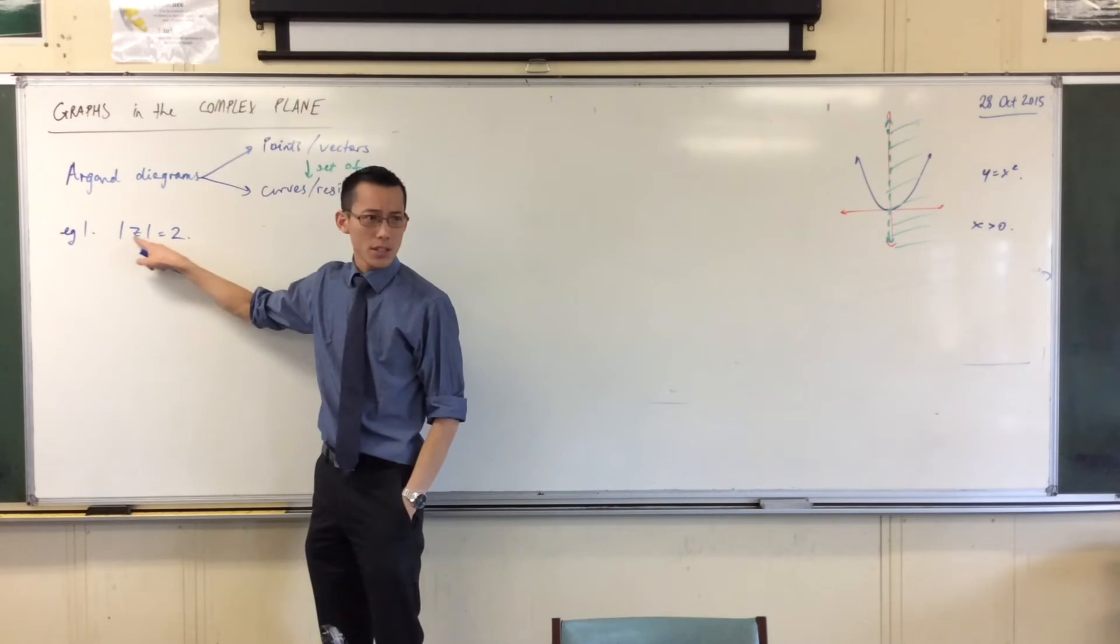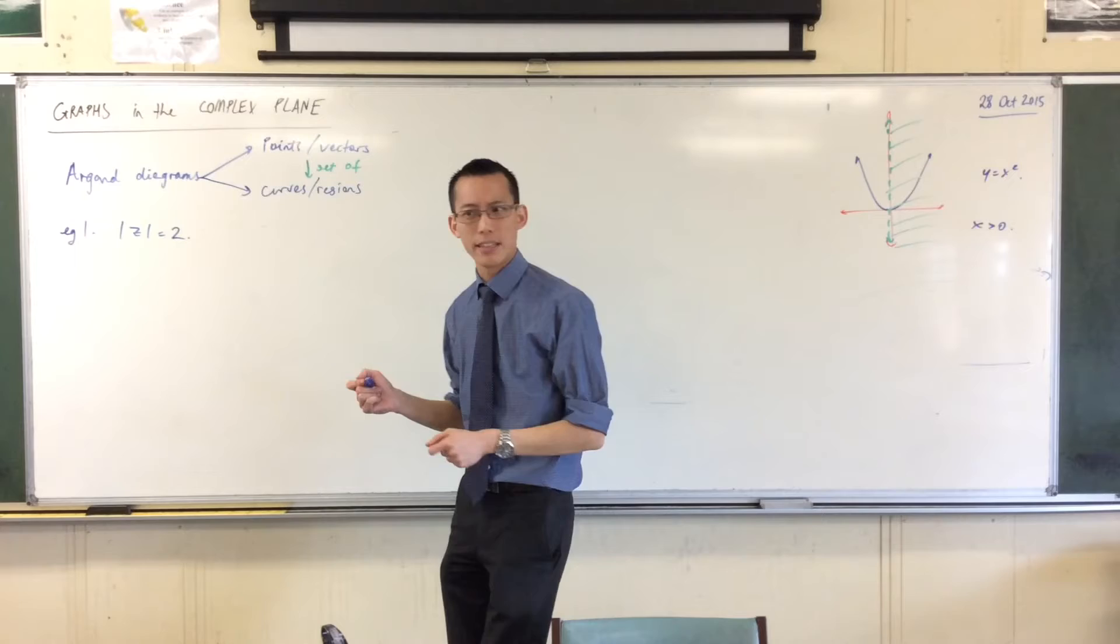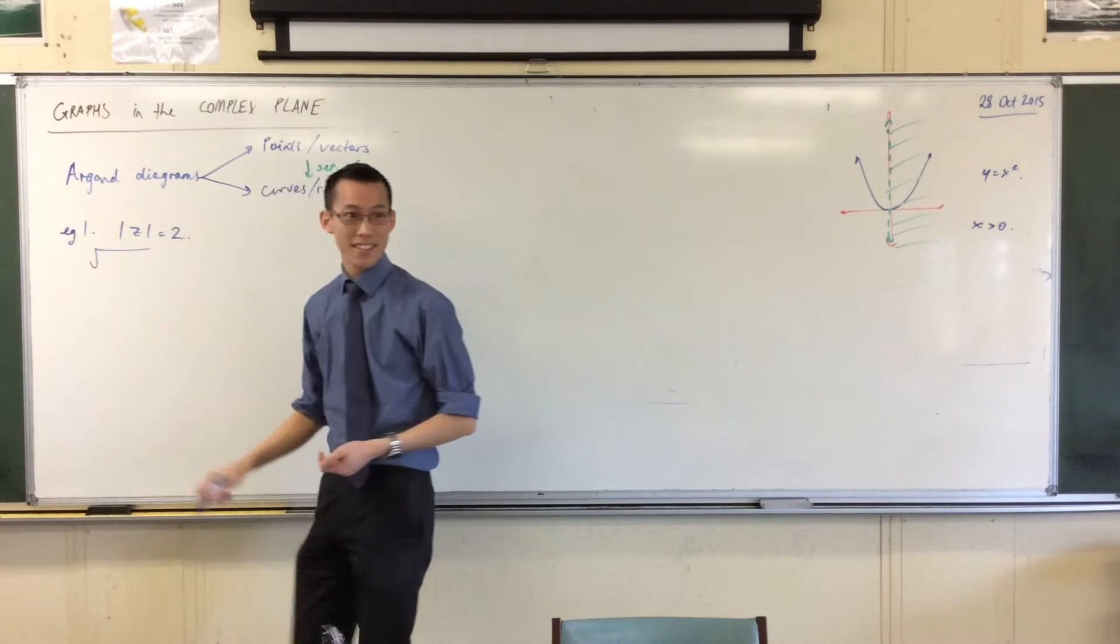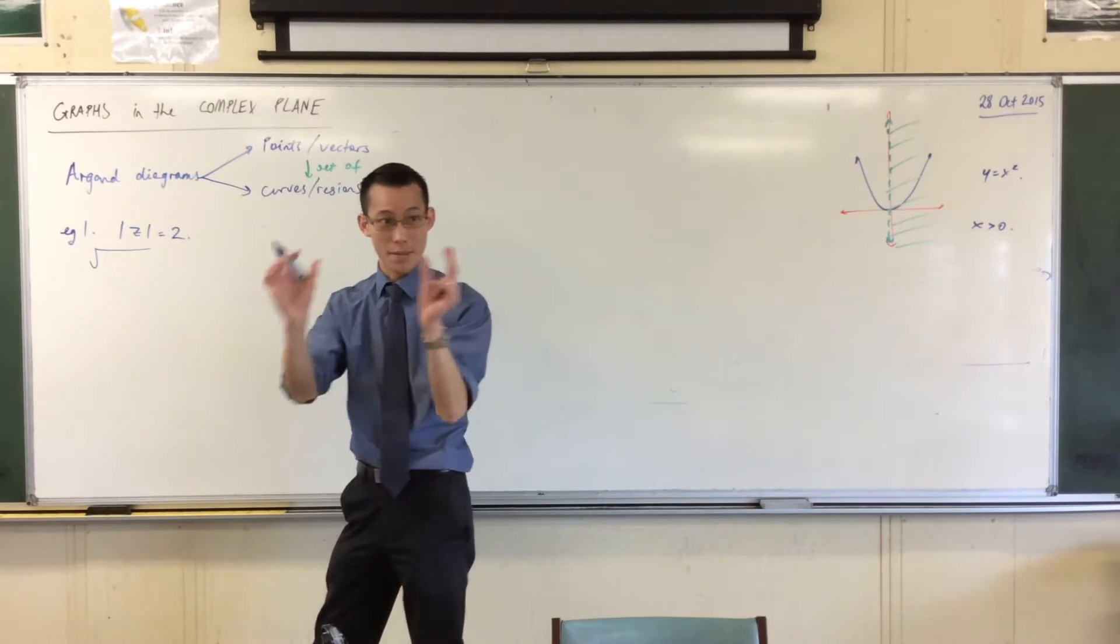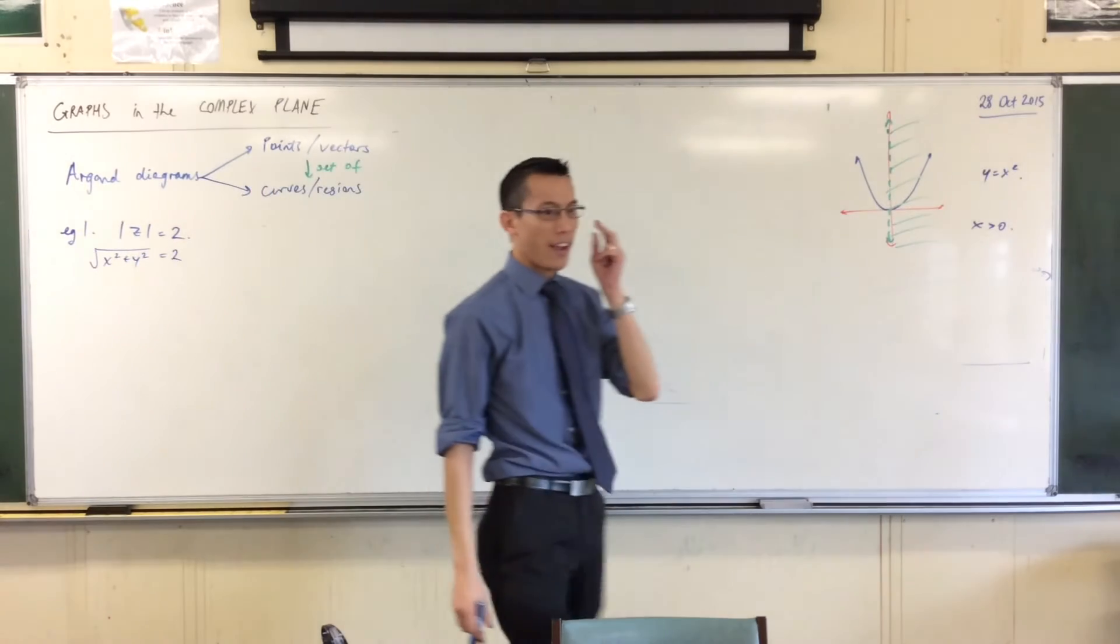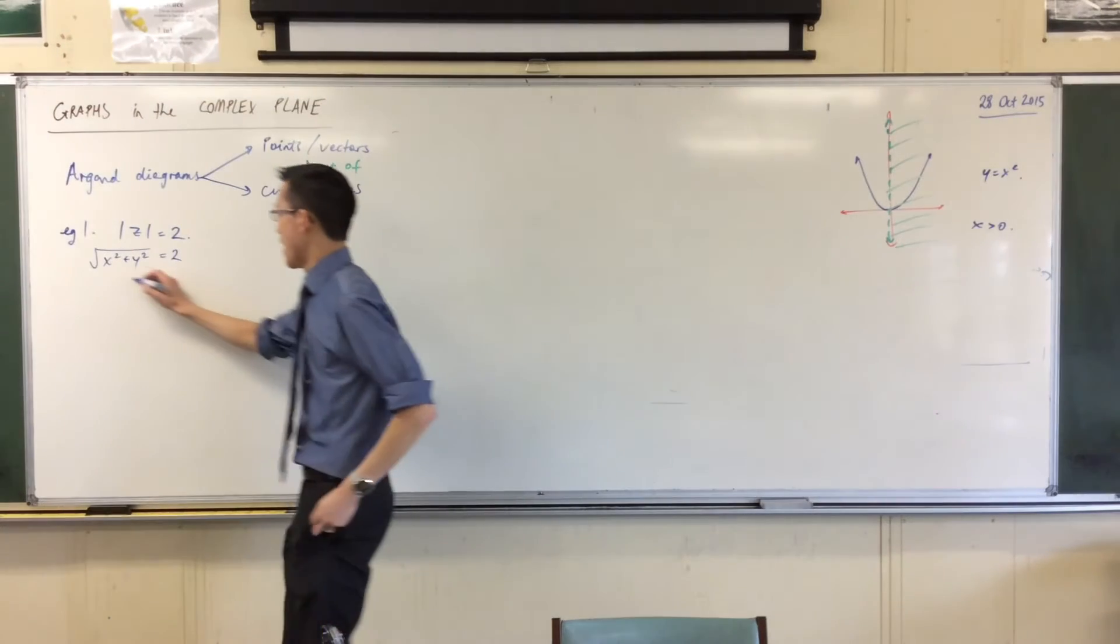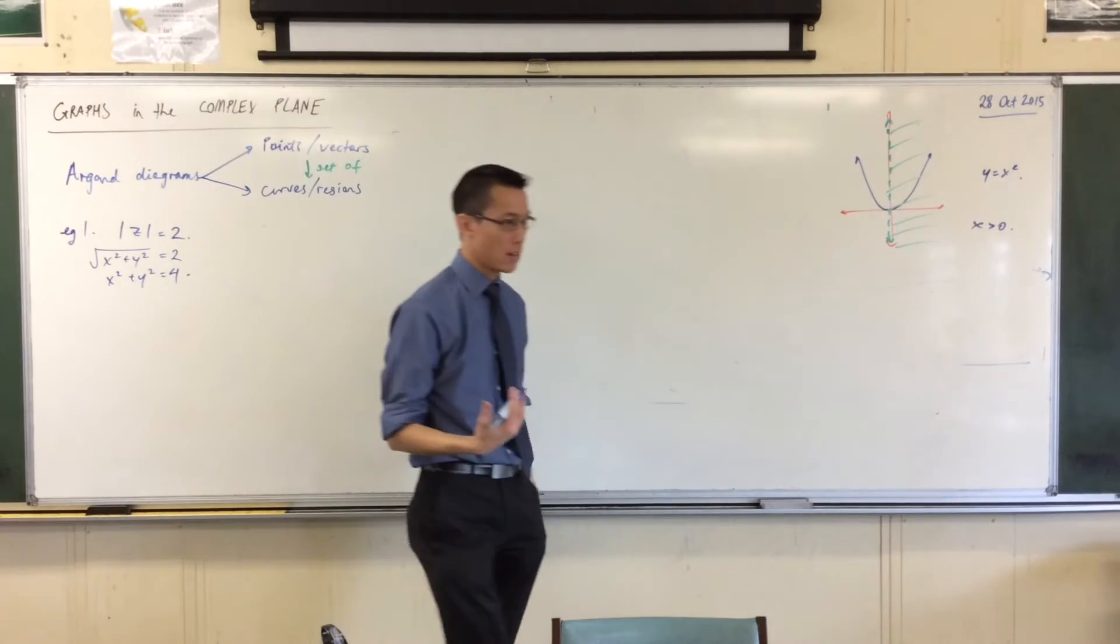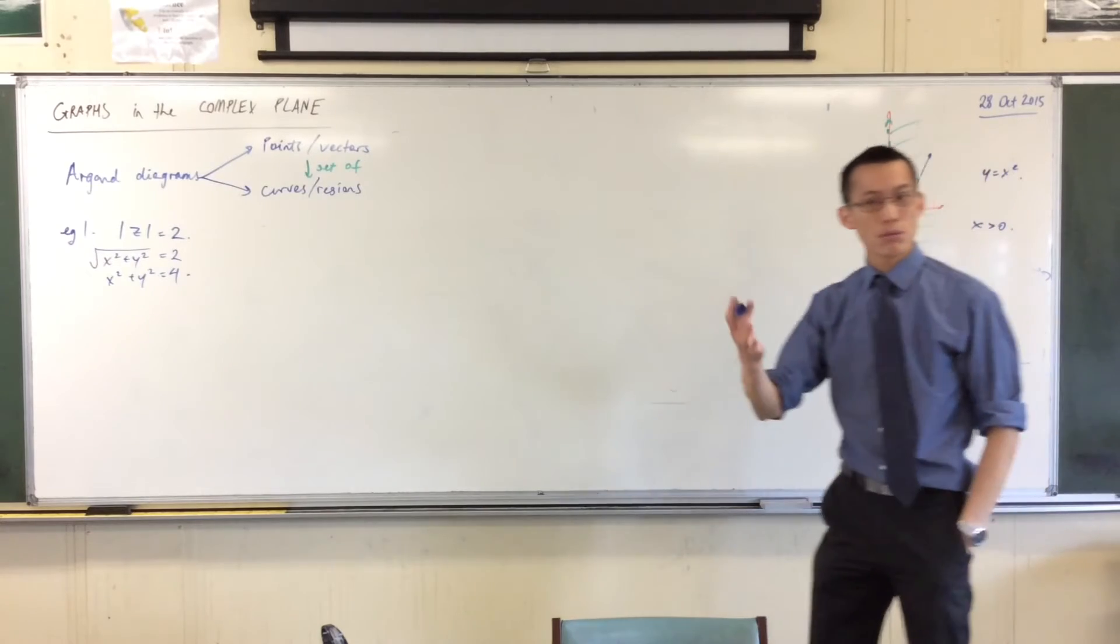The absolute value, the modulus of z. What is that? Like if z is x plus iy, how do I calculate the modulus of z? It starts with square root x squared plus y squared. I'm taking those coefficients of the real imaginary parts. So I've got this. Now if I want to graph this thing, I guess I should probably square things out so it's nice and simple. And I know exactly what this shape is. This is a circle with center at the origin radius 2.